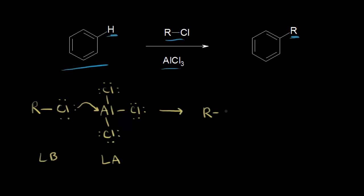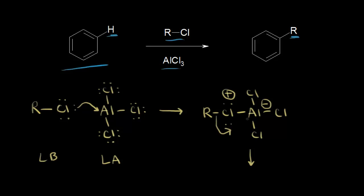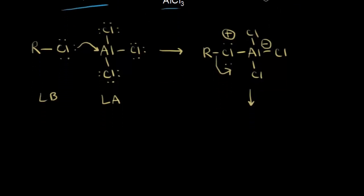We draw the result of our Lewis acid-base reaction. The chlorine is now bonded to the aluminum, which is bonded to the other chlorines. Aluminum now has a negative 1 formal charge, and this chlorine has a plus 1 formal charge. Since halogens are electronegative, this chlorine takes those electrons, removing a bond from our alkyl group, leaving it with a plus 1 formal charge — a carbocation.